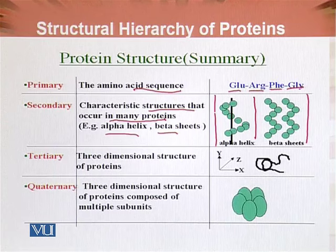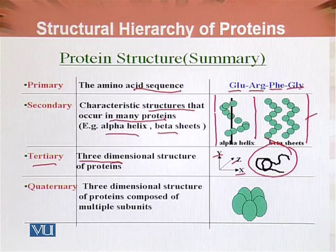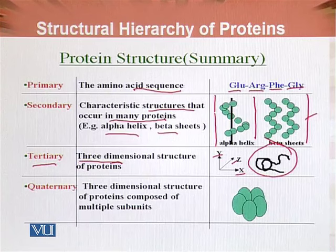Tertiary structure is when this secondary structure is folded three-dimensionally — along the x, y, and z axes — forming a specific configuration. The three-dimensional configuration of the secondary structure, and the sequence (primary structure), when folded three-dimensionally on top of each other in a single polypeptide chain, is called the tertiary structure.